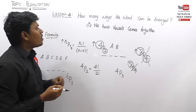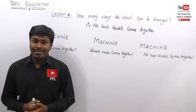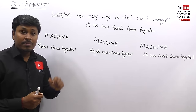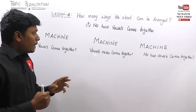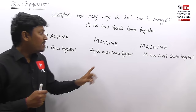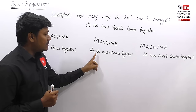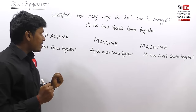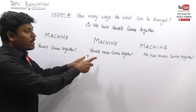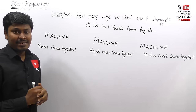Before solving condition-based sums, let me clarify the difference between Lesson 2, Lesson 3, and Lesson 4, because understanding this difference is essential. Many students have doubts between lesson 3 and lesson 4. Lesson 3 is 'vowels never come together,' while lesson 4 is 'no two vowels come together.' You must know the difference between these two concepts.